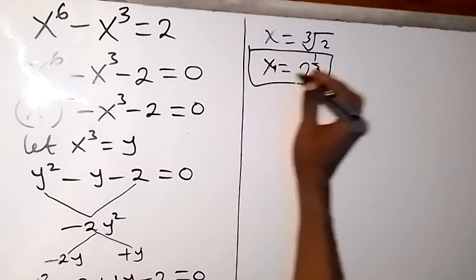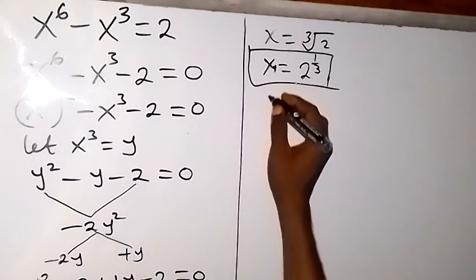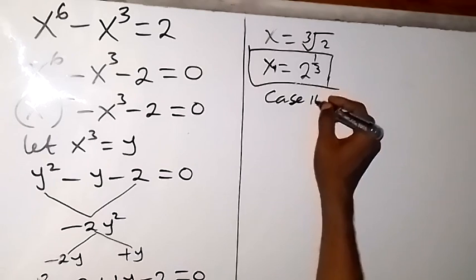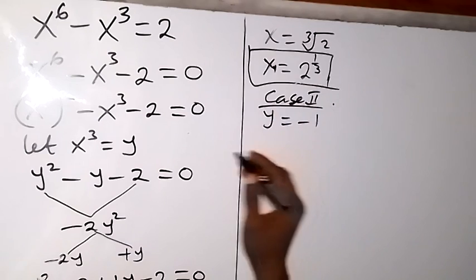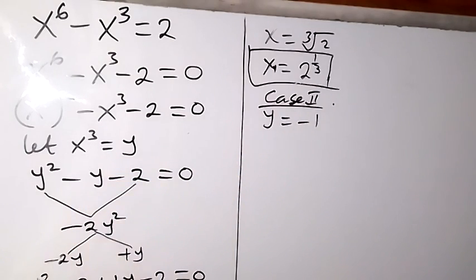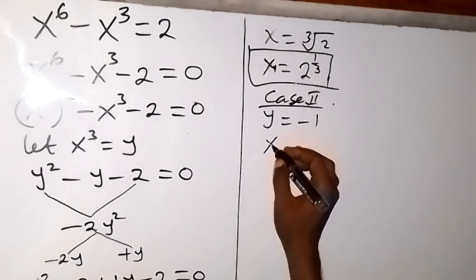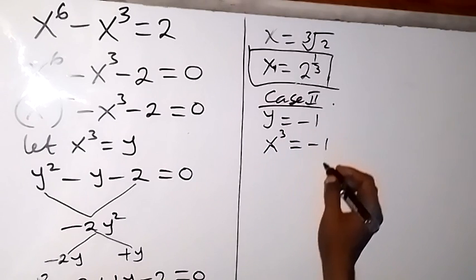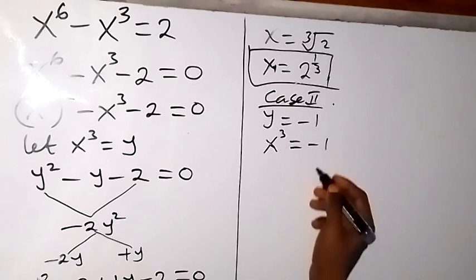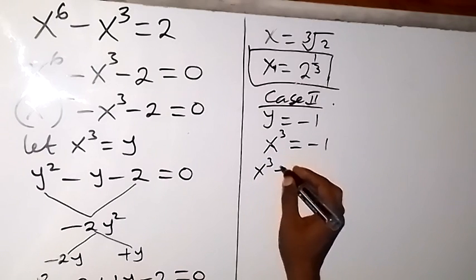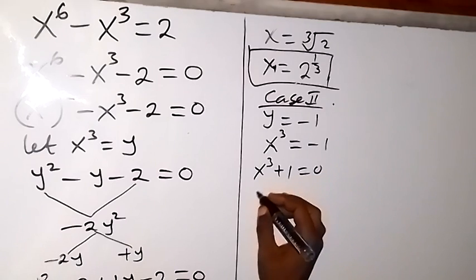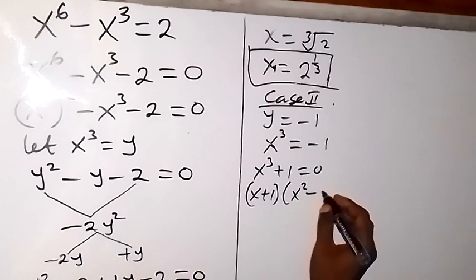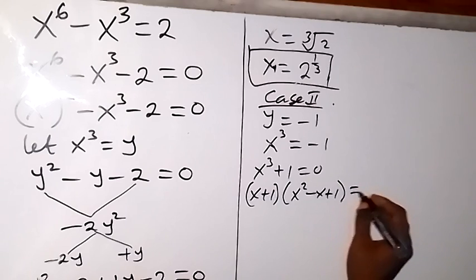For case 2, that is when y equals to minus 1. Our y is x cubed, so we have x cubed equals to minus 1. Taking minus 1 to this side, we have x cubed plus 1 equals to 0. This x cubed plus 1 can also be written as x plus 1, multiplied by x squared minus x plus 1, which equals to 0.